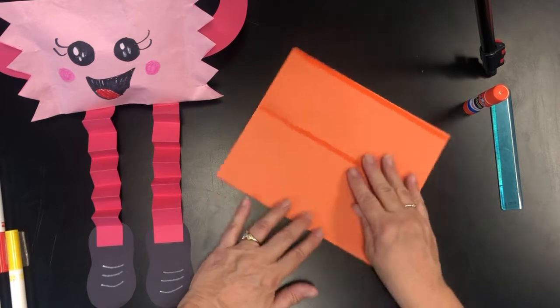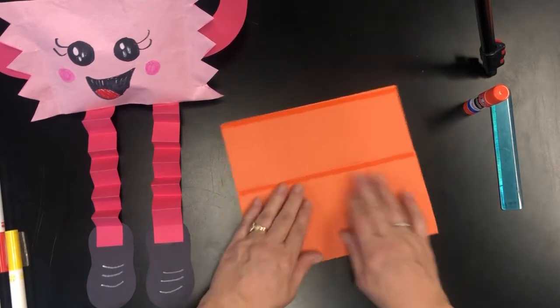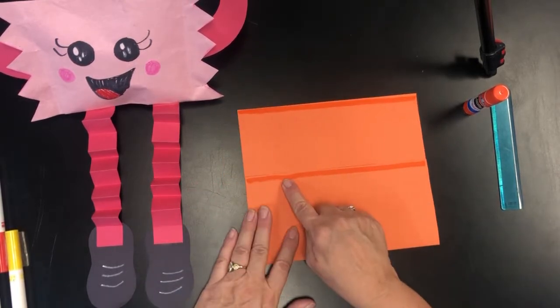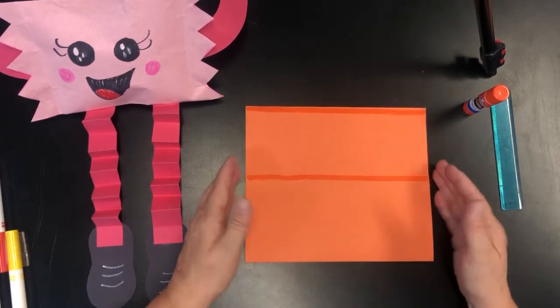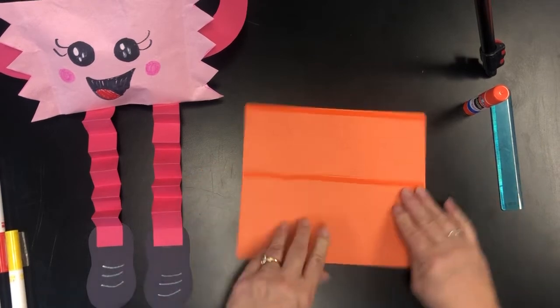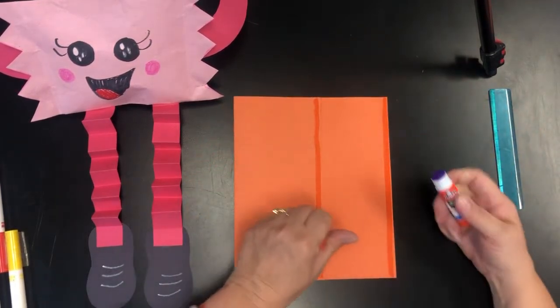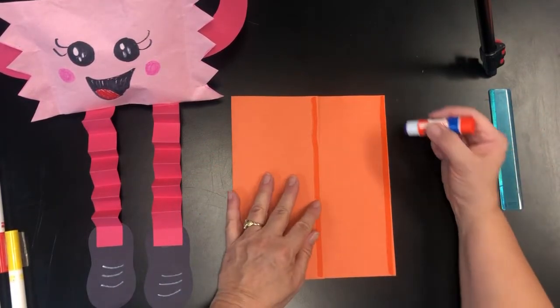But the important part is that you don't fold this all the way up to the top. You just want to fold it somewhere in this area here because it'll make it easier when you fold it over to glue to make your envelope.